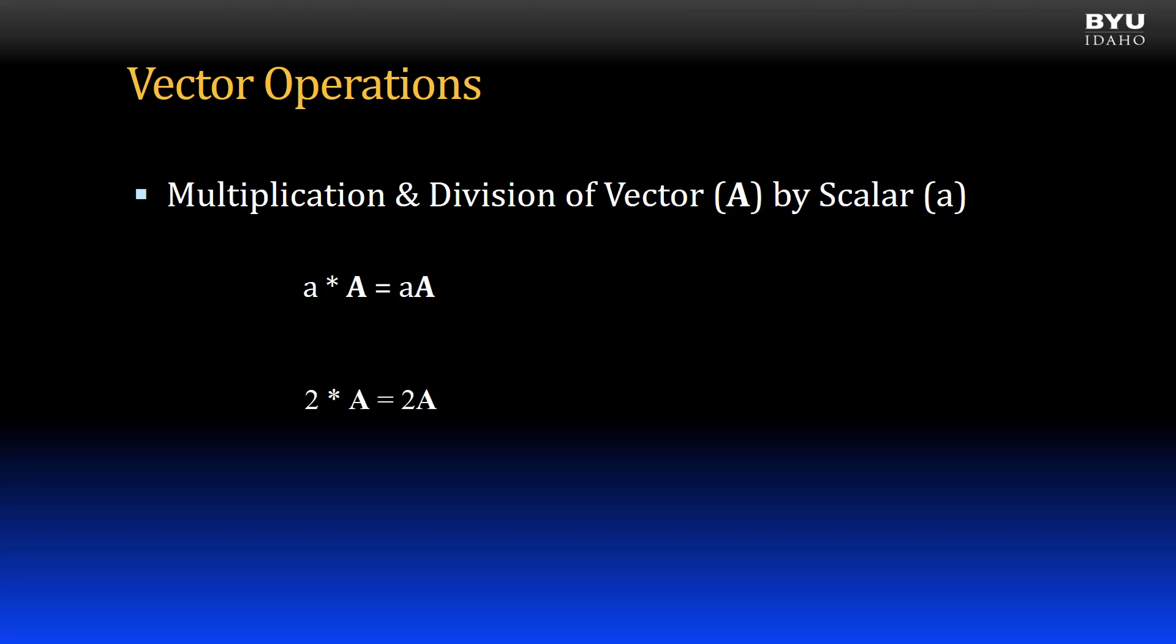Let's say we're going to take a vector and multiply it by two. The easiest way to understand this is to picture it graphically. If I have a vector A with a magnitude of 1.5 pounds and multiply it by 2, the scalar stretches that vector to 3 pounds.